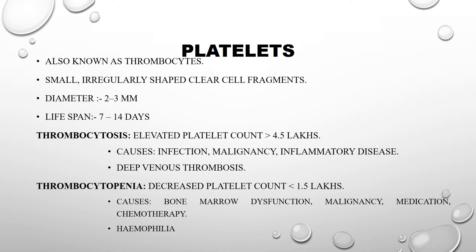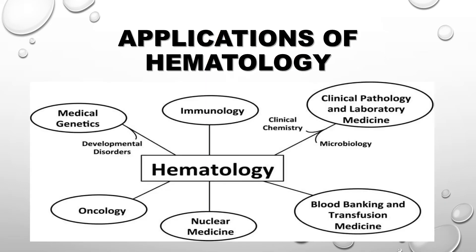A key example of a bleeding disorder is hemophilia, in which blood does not clot properly and the platelet count is decreased. Application of hematology: Hematology plays a very important role in medical genetics. It covers the study of various methods, development disorders, surgery, and cancer cells in the system, as well as laboratory medicine and immunology.